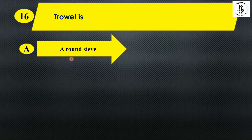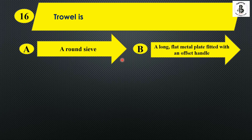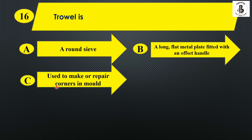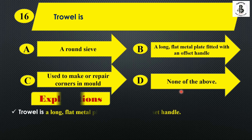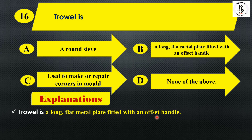The next question: a trowel is — option A: a round sieve; option B: a long flat metal plate fitted with an offset handle; option C: used to make or repair corners in molds; option D: none of the above. A trowel is a long flat metal plate fitted with an offset handle, so the right answer is option B.